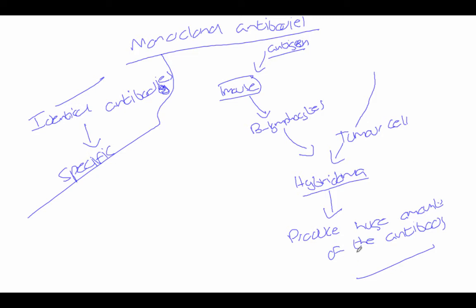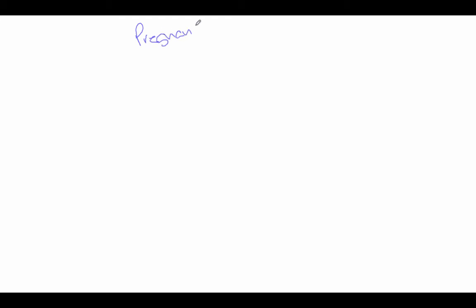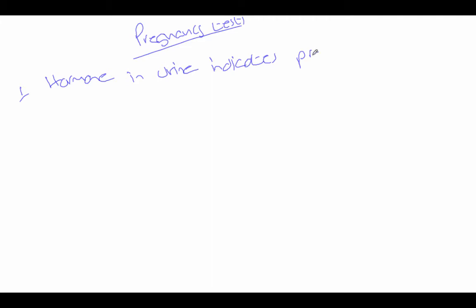So why might monoclonal antibodies be useful? The first specific use is pregnancy tests. There is a hormone in the urine that only occurs when a woman is pregnant, so that hormone in the urine indicates pregnancy. Women use a stick that has two different parts — a part where you pee, and a test strip section.